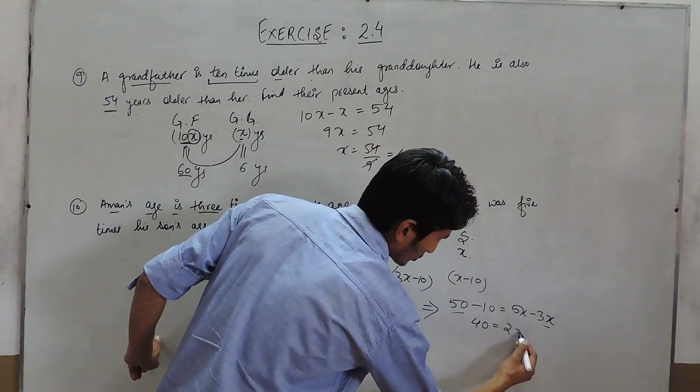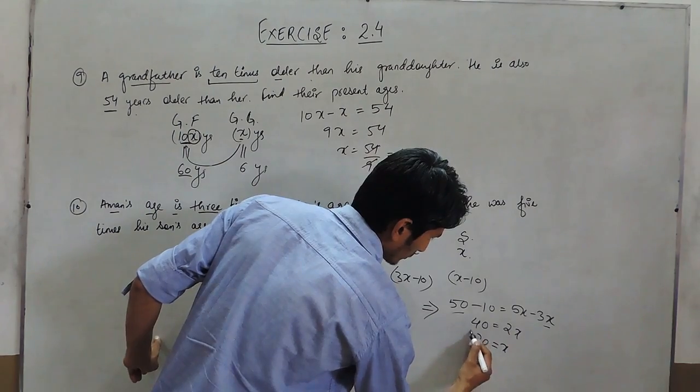So, this is 40 and this is 2x, so x equals to 20.